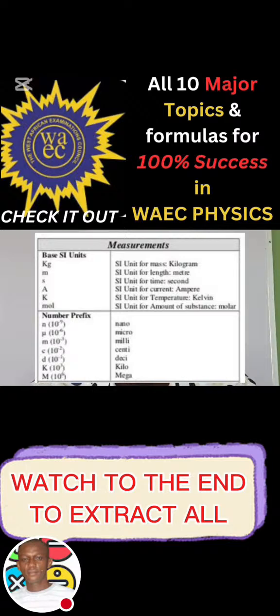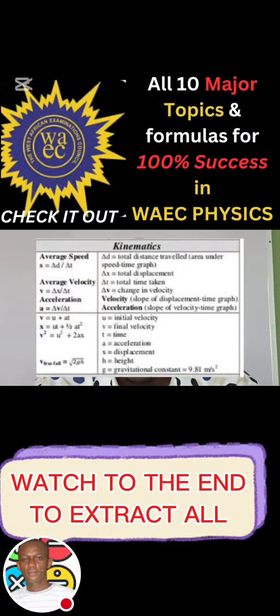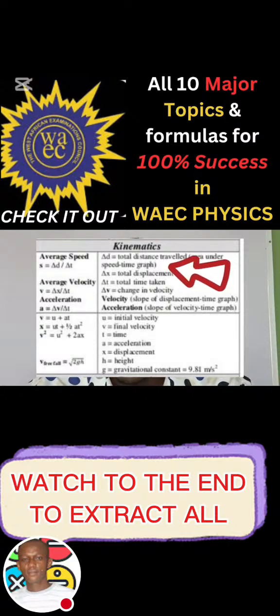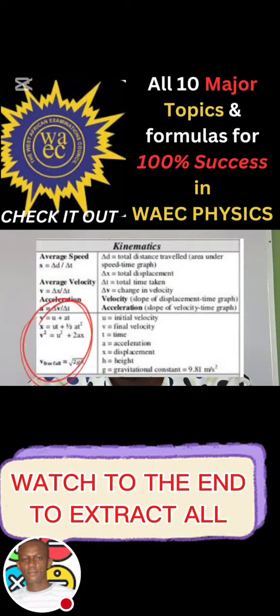Kilo, 10 to the power 3, and mega, that's 10 to the power 6. So the next topic, which is the third topic now, is the kinematics. Under kinematics, which is the third one, we have the average speed where x-bar is equal to change in d over change in t, and we have the average velocity, that is v is equal to change in x over change in t. Some use s, not x. So change in x over change in t, and we have the acceleration, that is change in velocity over change in t, which is change in time. What are the meaning of those parameters? Change in d, that's total distance traveled or area on the speed-time graph. Change in x, that is total displacement. Change in t is the total time taken. Change in v, that is the change in velocity.